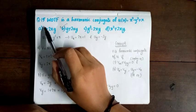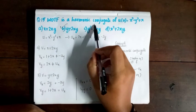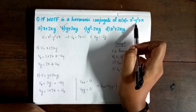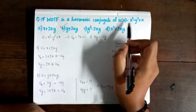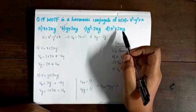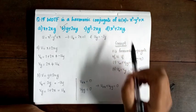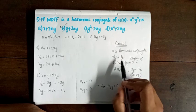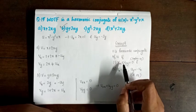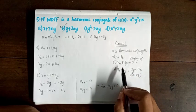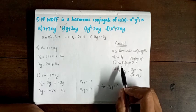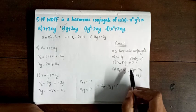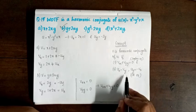Next question, 15. Which of the following is the harmonic conjugate of u(x,y) = x² - y² + x? First, a function v is the harmonic conjugate of u if it satisfies two conditions: the Laplace equation (vxx + vyy = 0) and the Cauchy-Riemann equations.